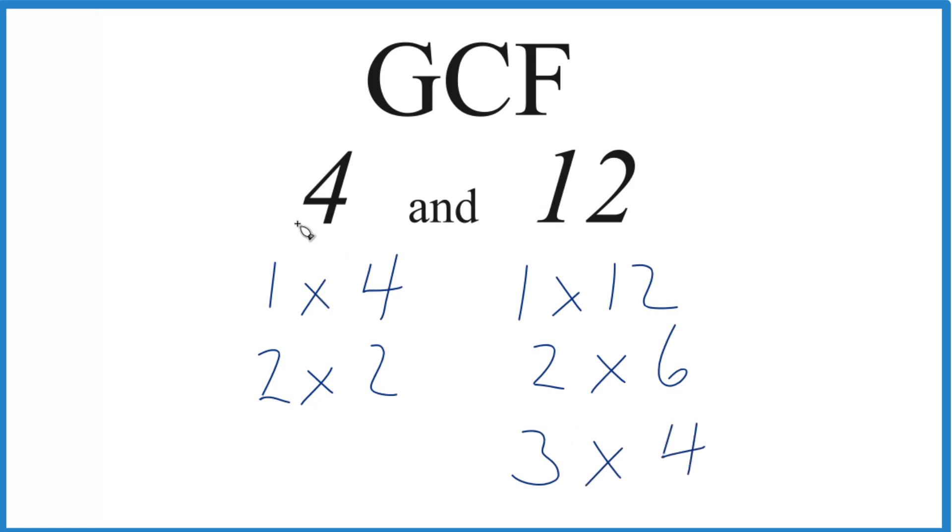So I can see for 4 we have 1 and for 12 we have 1, so that's a common factor. We also have 2 right here and here. Finally, we have 4 for both of them.